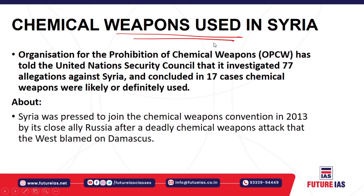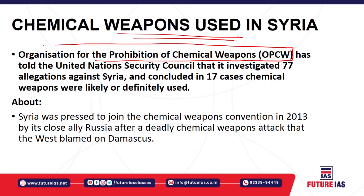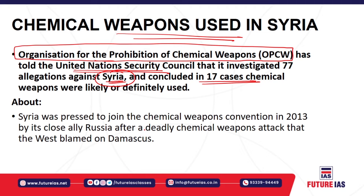The next topic is chemical weapons used in Syria. The Organization for the Prohibition of Chemical Weapons (OPCW), an intergovernmental organization, recently informed the United Nations Security Council that the President of Syria ordered the use of chemical weapons against his own civilians. Allegations against Syria are related to 17 confirmed cases out of 77 allegations. Syria — a close ally of Russia — joined the Chemical Weapons Convention under Russian pressure and was given powers by OPCW in 2013.